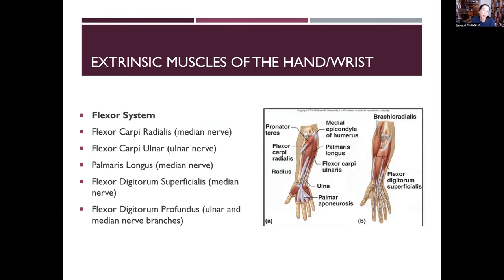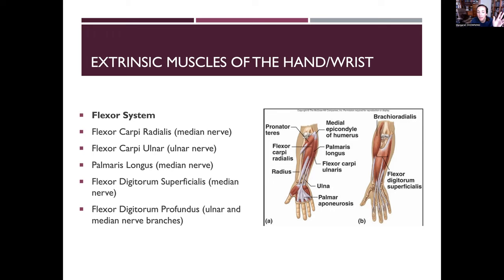The extrinsic muscles of the hand — the flexor system — include flexor carpi radialis, flexor carpi ulnaris, palmaris longus, flexor digitorum superficialis, and flexor digitorum profundus. The median nerve innervates muscles on the thumb side of the flexors. Don't be thrown off by flexor carpi radialis — it's still median nerve. Flexor carpi ulnaris is on the ulnar side, so it's the ulnar nerve. Flexor digitorum profundus is split: the pinky side is ulnar distribution and the thumb side is median nerve.